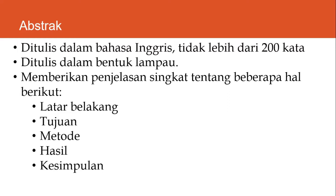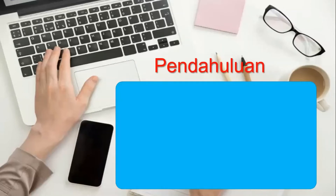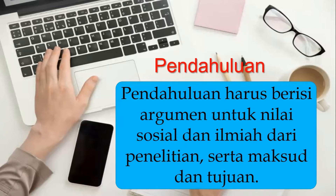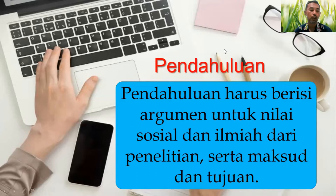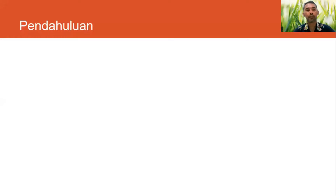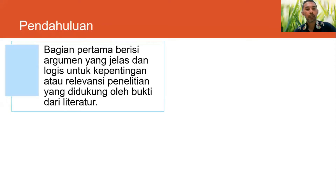Ketika kita menulis pendahuluan, kita harus memperhatikan bahwa pendahuluan harus berisi argumentasi untuk nilai sosial dan ilmiah dari penelitian serta maksud dan tujuan penelitian tersebut. Ketika kita menyusun pendahuluan, perlu diperhatikan ada setidaknya empat bagian utama. Bagian pertama adalah pendahuluan berisi argumentasi yang jelas dan logis untuk kepentingan atau relevansi penelitian, dan ini harus didukung oleh sumber-sumber literatur.